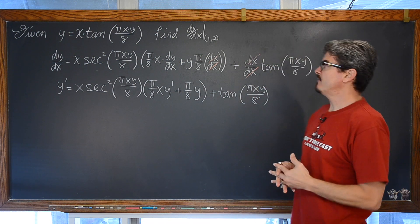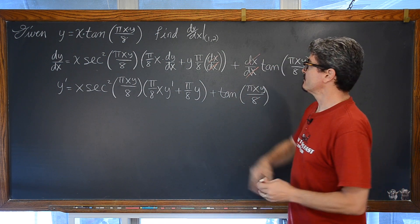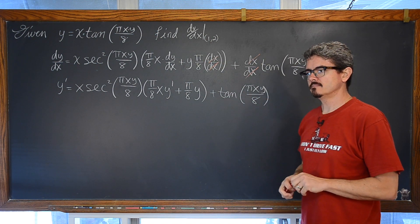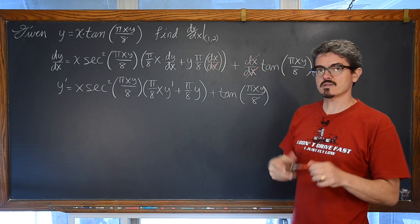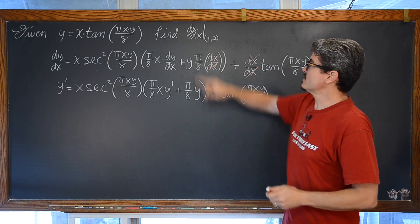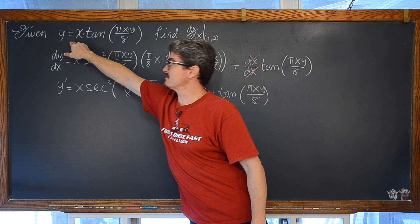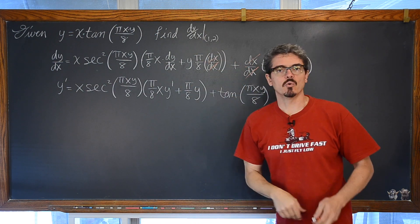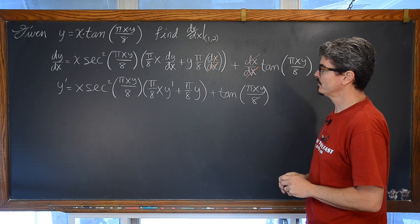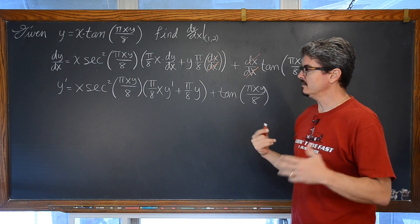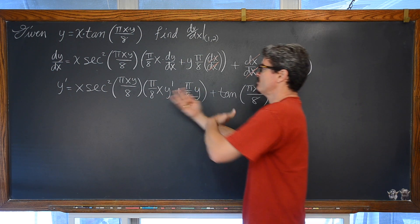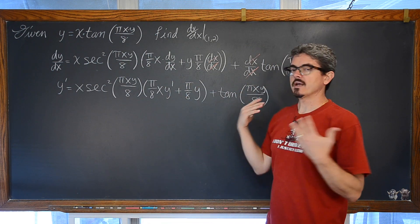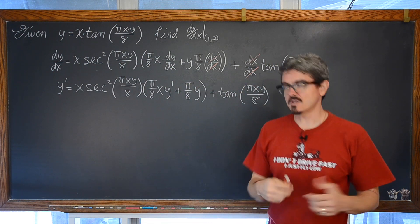Here, we are not asked to find dy/dx in general. We are asked to find the derivative at a point. So I am going to save myself some algebraic work and simplify this problem — I just need a numerical value, an instantaneous rate of change of this curve at the point (1, 2). So why do all the simplification for solving y prime with algebra when I could just be doing arithmetic with all the numbers?